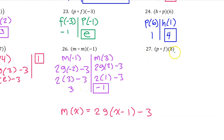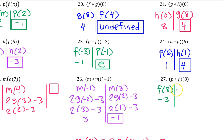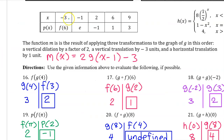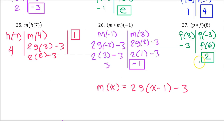Number 27. Working from right to left we begin with F at 8. F at 8 is negative 3. Moving to the left we next evaluate P at negative 3. P at negative 3 is F at 6. F at 6 is 2 — not negative 1. Always the closed circle, never the open circle. F at 6 is 2. That's the final answer for number 27.